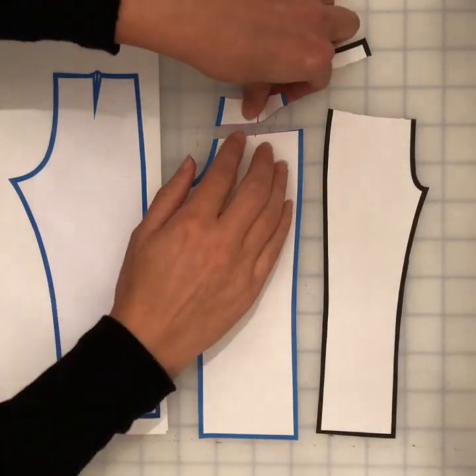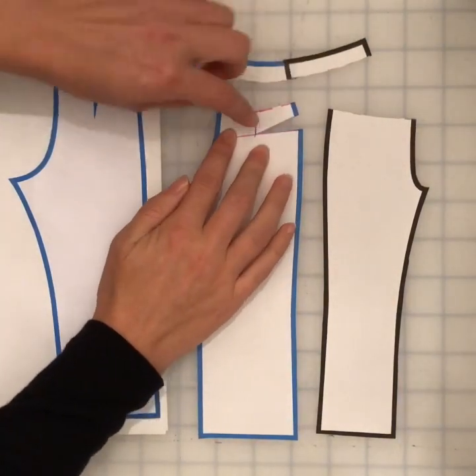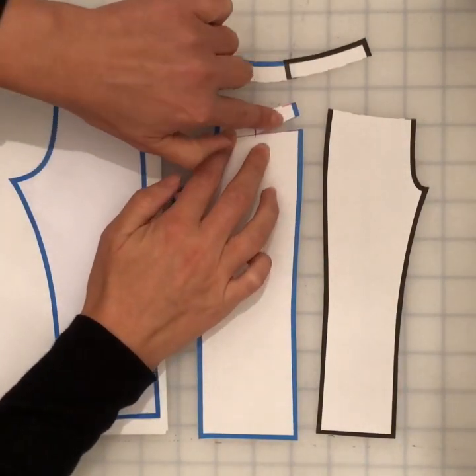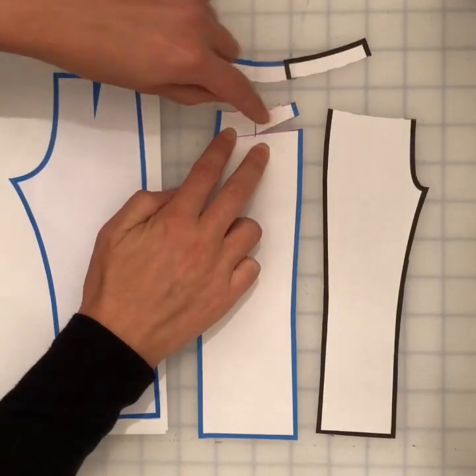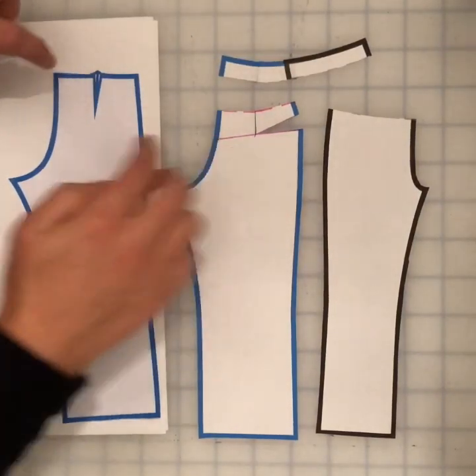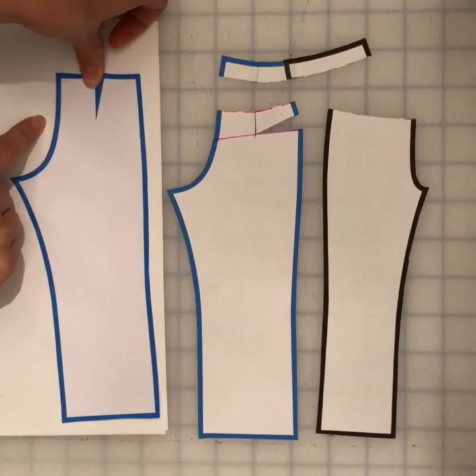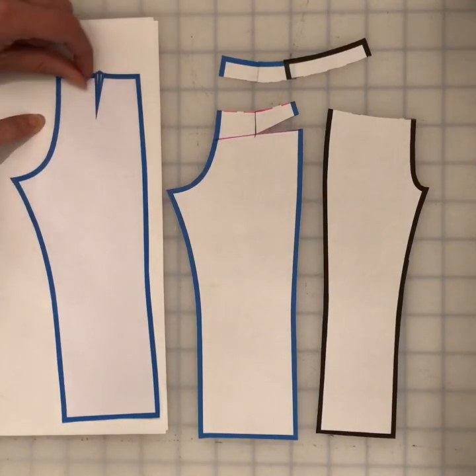Basically, what we're doing is slashing it shut. We're essentially moving the dart to another position, so we still have the dart, and it's always going to give us a nicer shape and fit in the back so it doesn't gap.